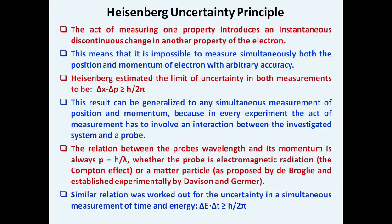Now let's do a small recap of Heisenberg's uncertainty principle in the context of Bohr's idealized thought experiment. The act of measuring one property induces an instantaneous discontinuous change in another property of the electron, meaning it is impossible to simultaneously measure both the position and momentum of an electron with arbitrary accuracy. The product of errors in position and momentum is greater than or equal to h-bar over 2.